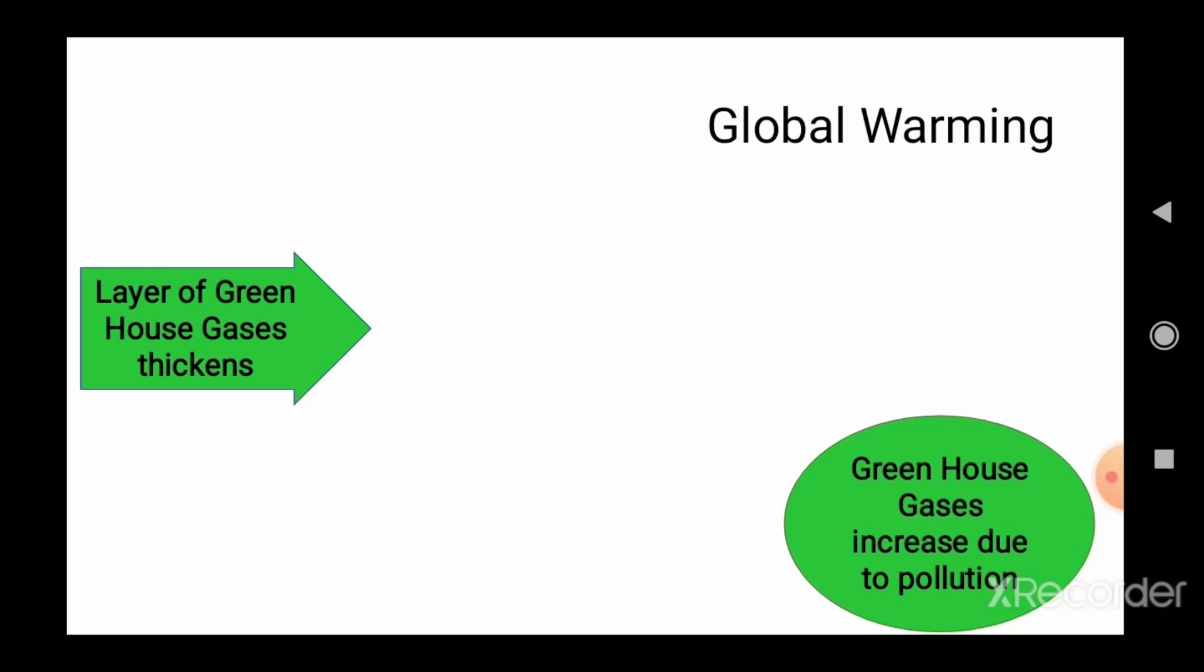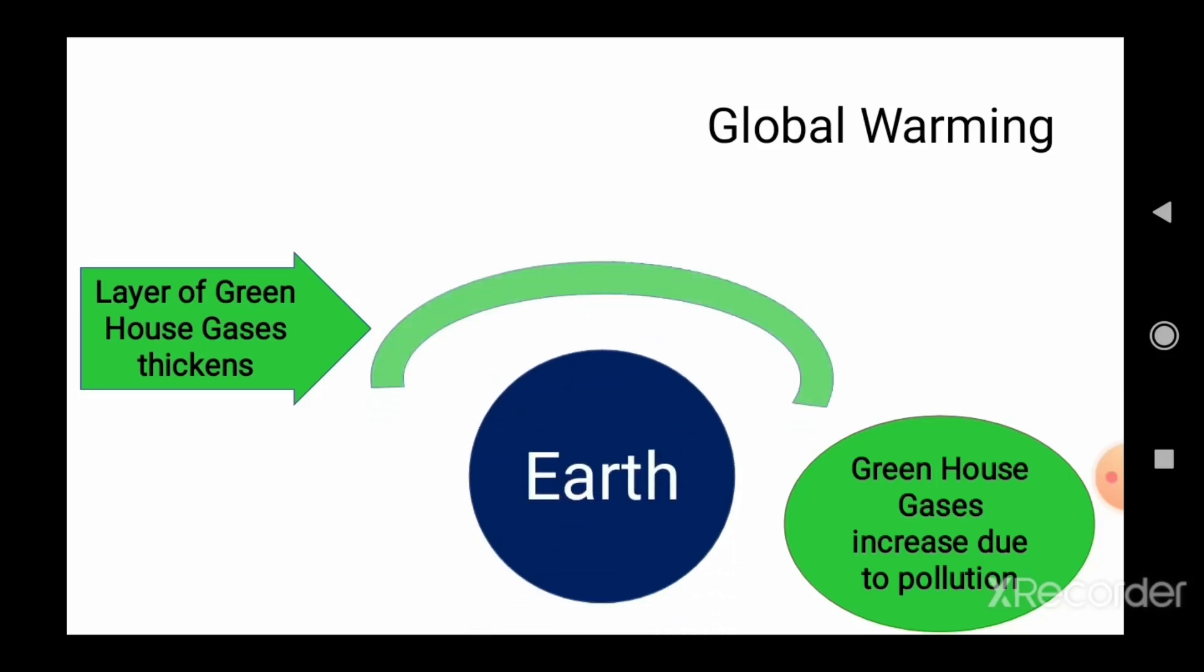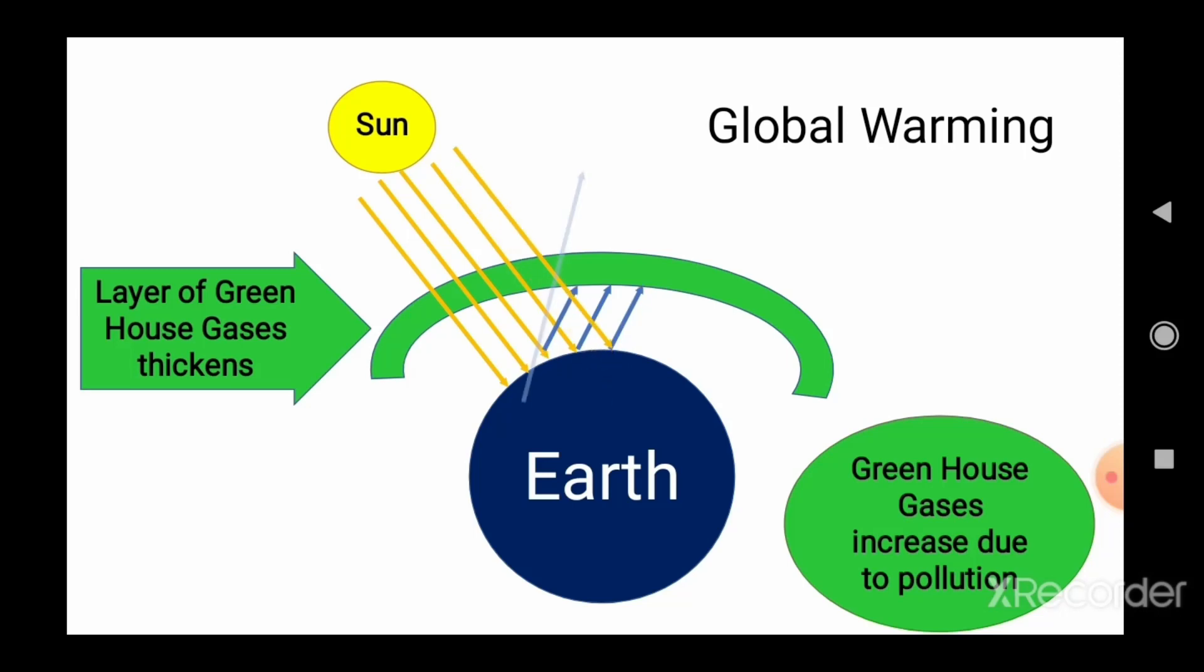In the case of global warming, due to increase in greenhouse gases, the layer of greenhouse gases gets thicker. In this case, when solar radiation is incident on Earth's surface, most of the radiation is trapped inside and very few radiations go outside or are reflected back. This causes warming on Earth's surface, which is called global warming.